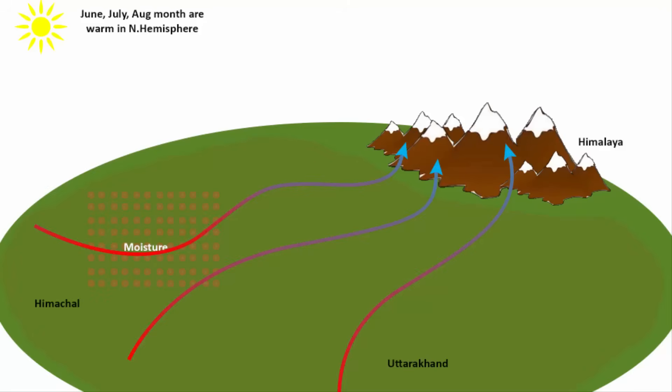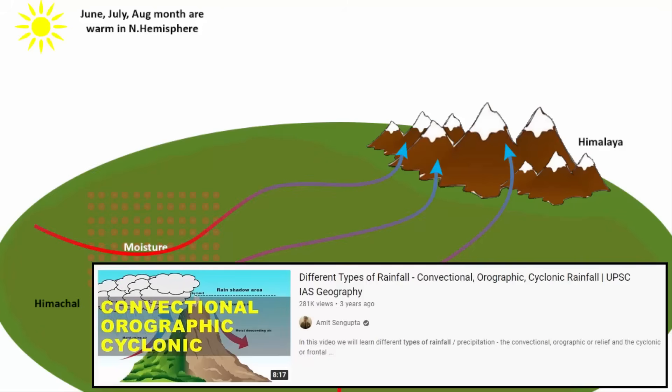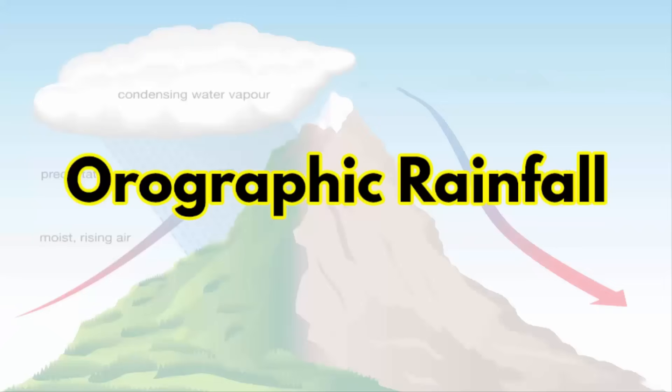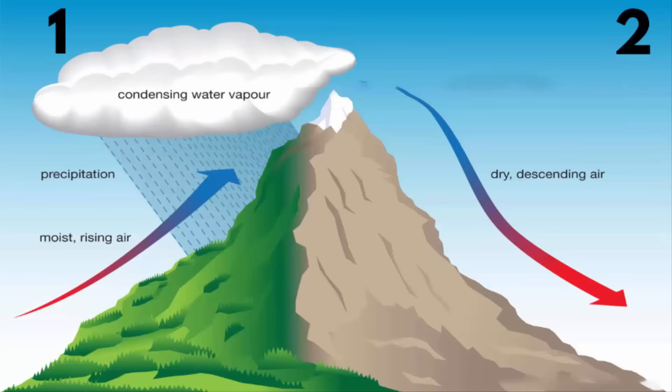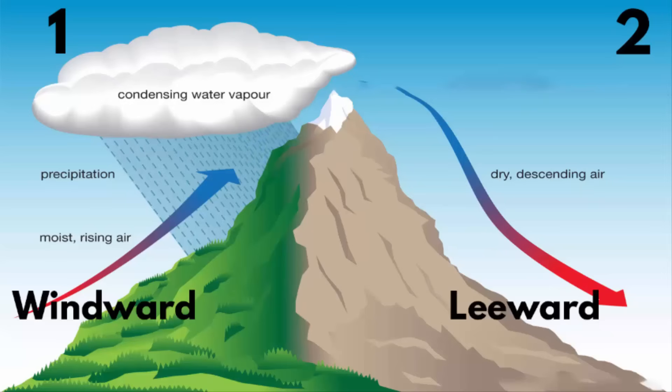As the warm air moves towards the Himalayan ranges, or you can say hilly terrain, if you can recollect, it will remind you of orographic rainfalls. I have a separate video where I have explained different types of rainfall. In that, I have explained about orographic rain. I will again explain briefly here. There are two sides of a mountain, windward side and leeward side.